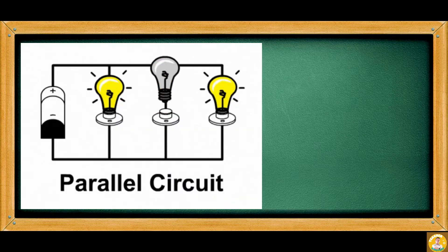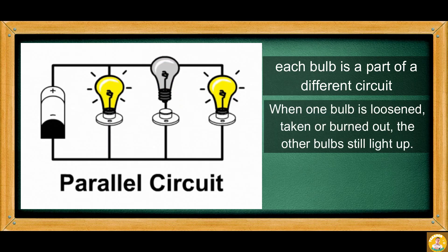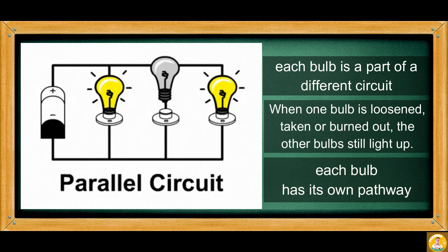A parallel circuit, on the other hand, has light bulbs with different loops, thus each bulb is a part of a different circuit. When one bulb is loosened, taken, or burned out, the other bulbs still light up. This is because each bulb has its own pathway — a break in one pathway does not make all the lights go out because electricity can still flow through the other pathways. So what kind of circuit do you have at home?